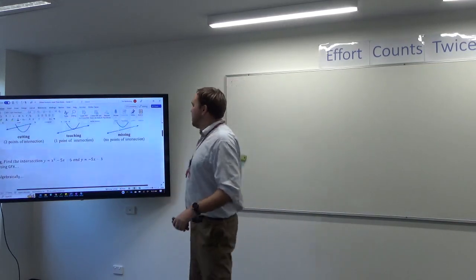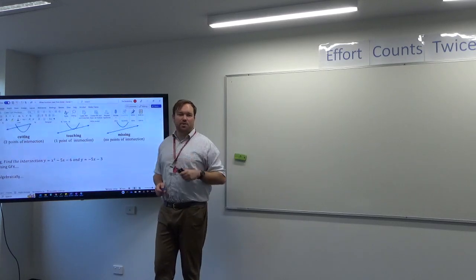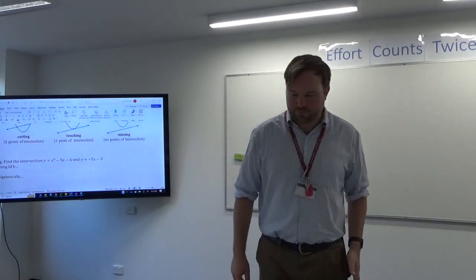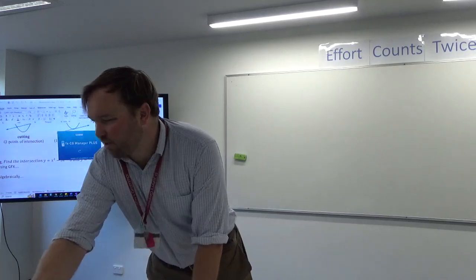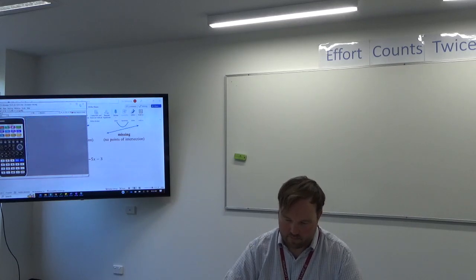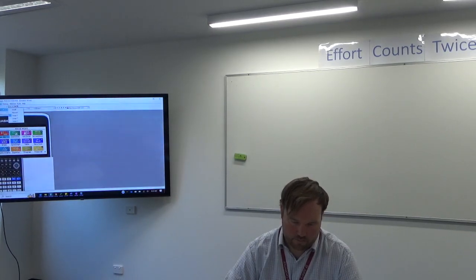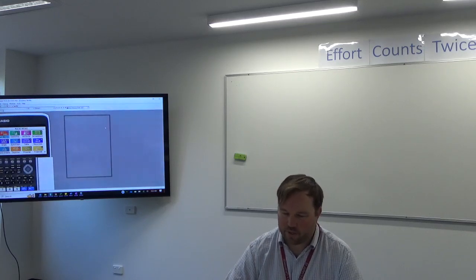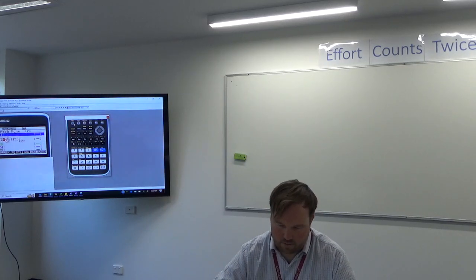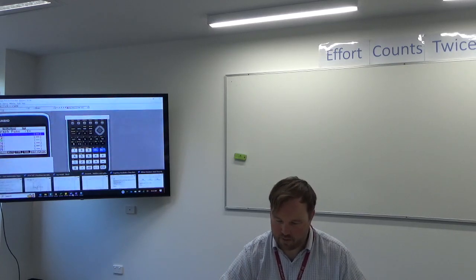So we're going to look at the graphs: x squared take 5x take 6, and y equals minus 5x take 3. And to start with, we're going to do it the easy way, which is to use our calculator. So can you guys grab your calculator out if you have one? I'll open mine up. So in your calculator, let me adjust my view. Alright, we're going to go to graph mode, so hit 5, delete whatever's there. And then we're going to enter our two graphs. They're on the sheet in front of you.